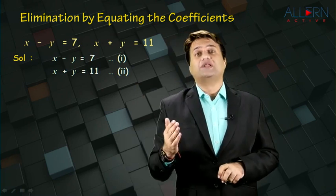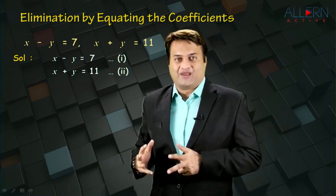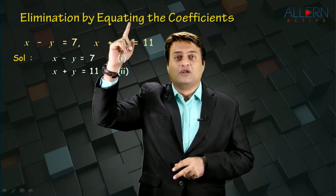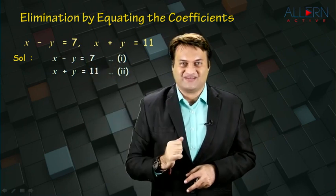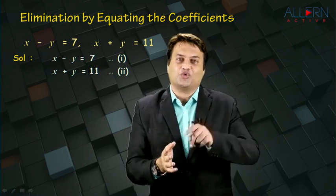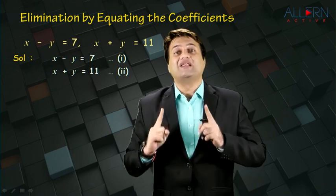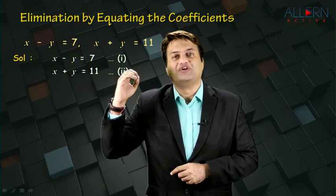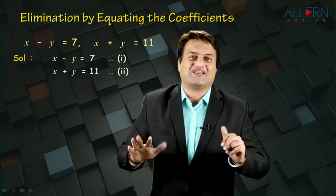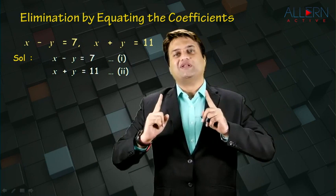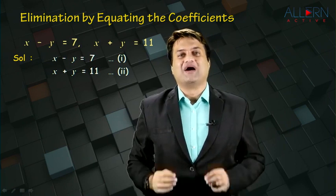The question is: which variable is to be eliminated? How do we decide whether to eliminate x or y? We need to eliminate that variable whose coefficients are equal in both equations. For example, if the first equation has 2x and the second equation also has 2x, then 2x and 2x will get cancelled — it will get eliminated. But 2x and 3x do not get cancelled. So we eliminate the variable whose coefficients are equal — that is the reason it is called elimination by equating the coefficients.